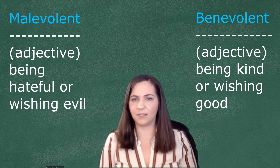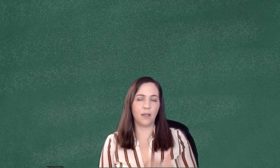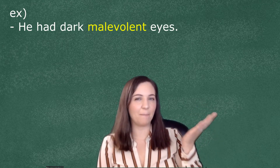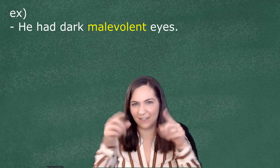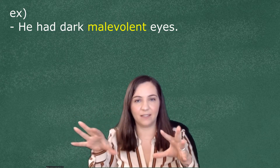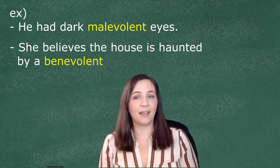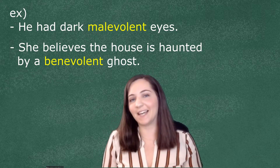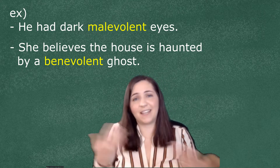Let's look at these in a sentence. In our example sentence: 'He has dark malevolent eyes' — meaning he has an evil glare or an evilness to his eyes. Another example: 'She believes the house is haunted by a benevolent ghost' — so it's a nice ghost. It doesn't want to hurt her.